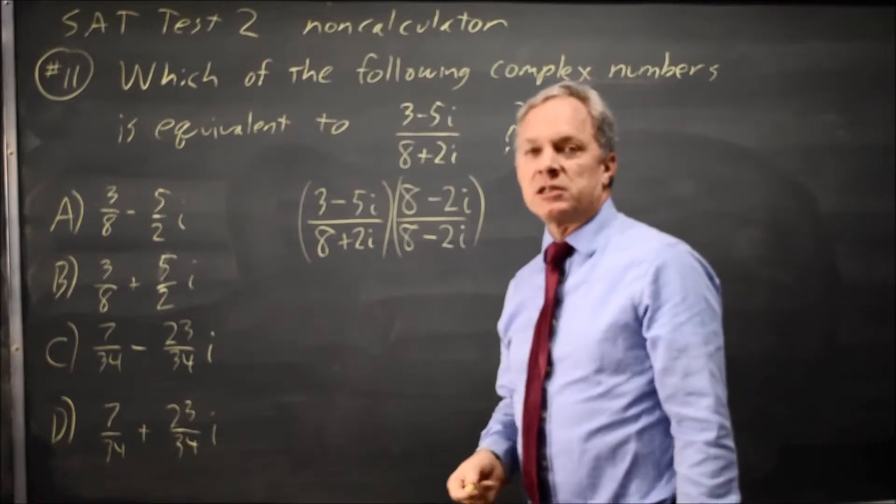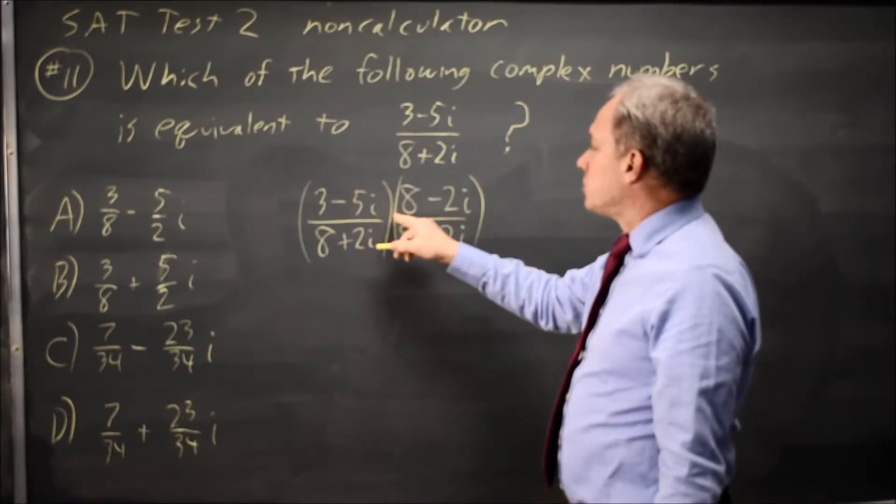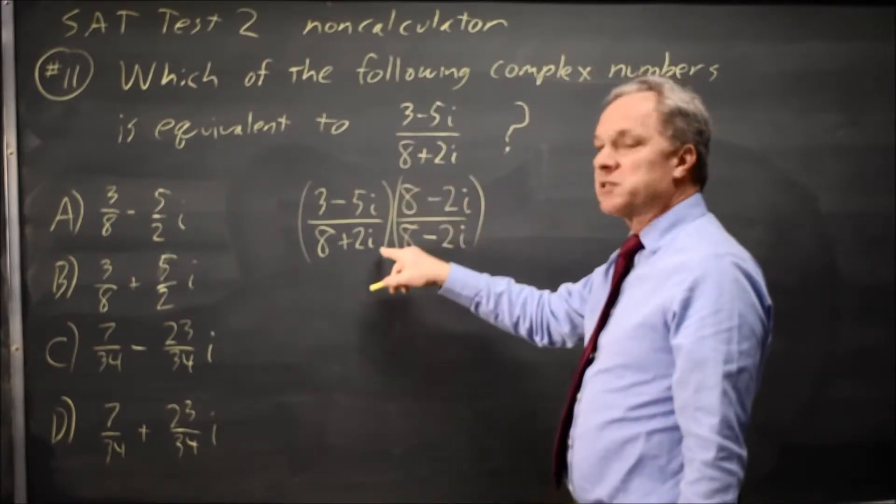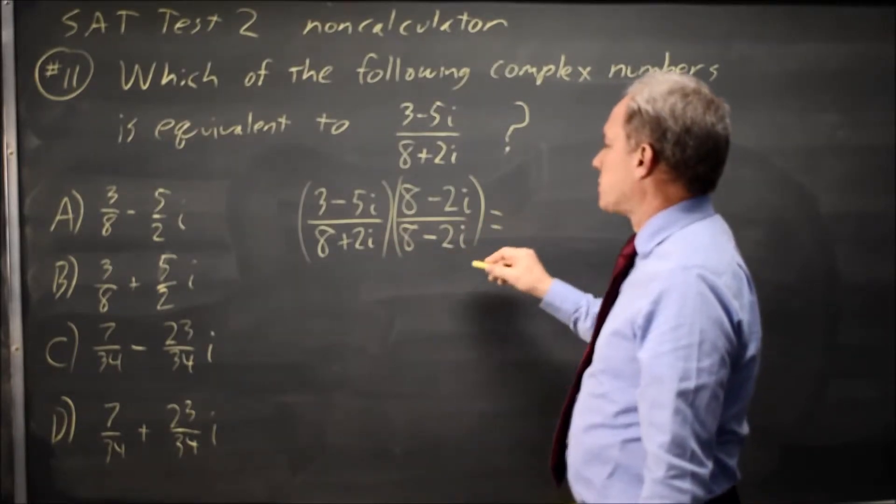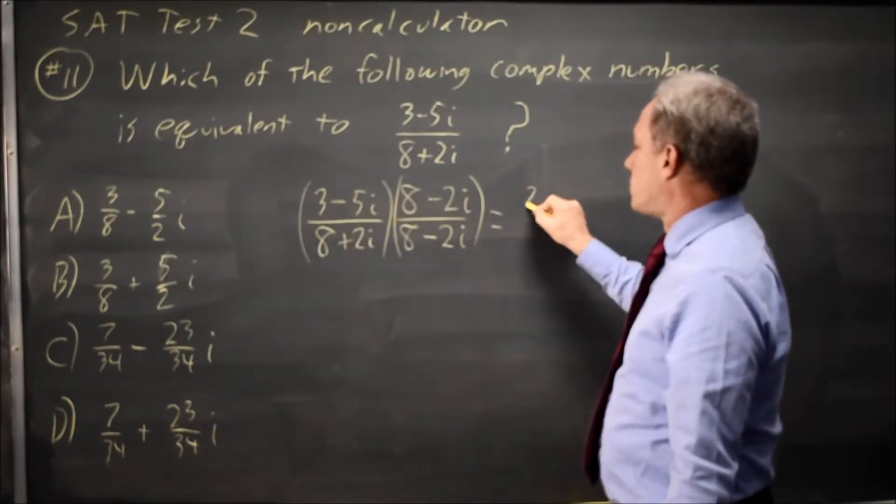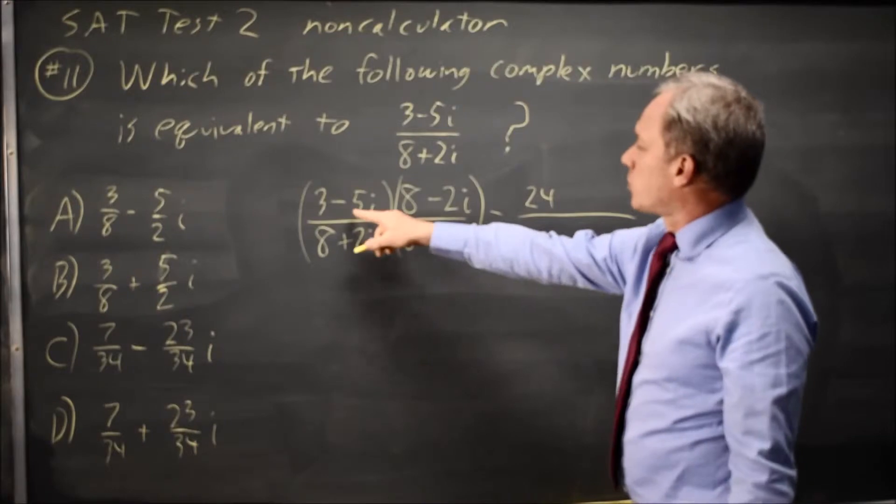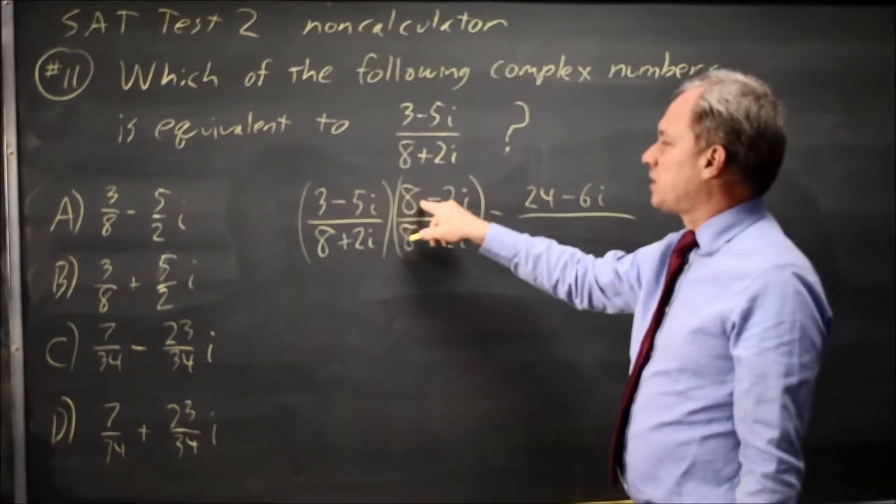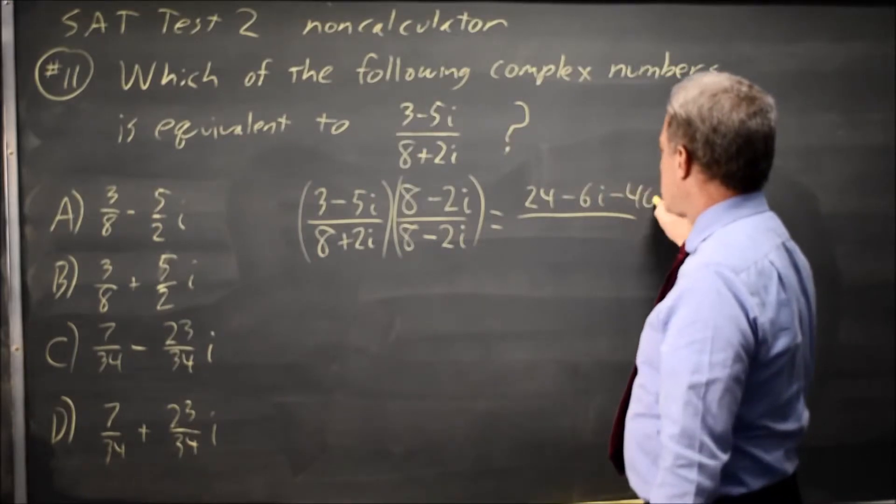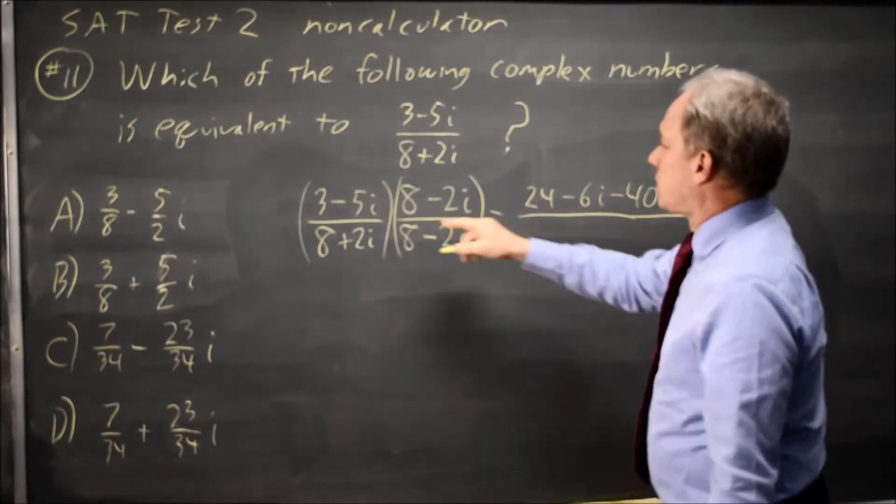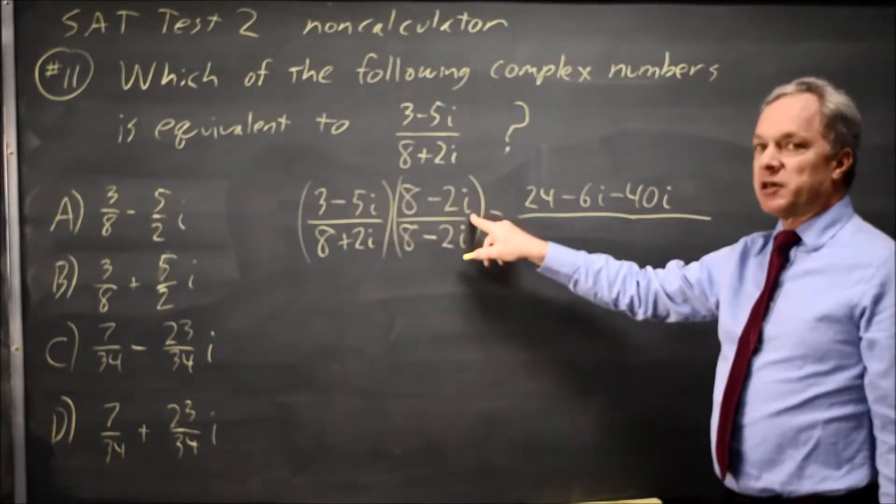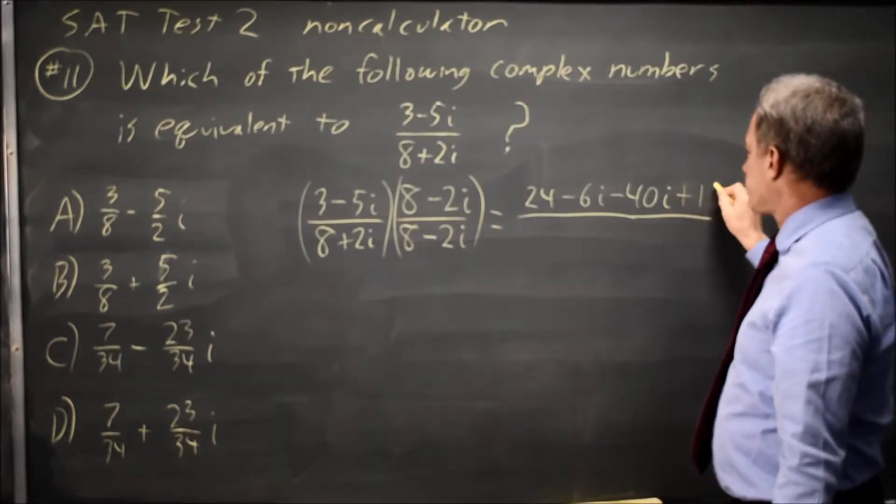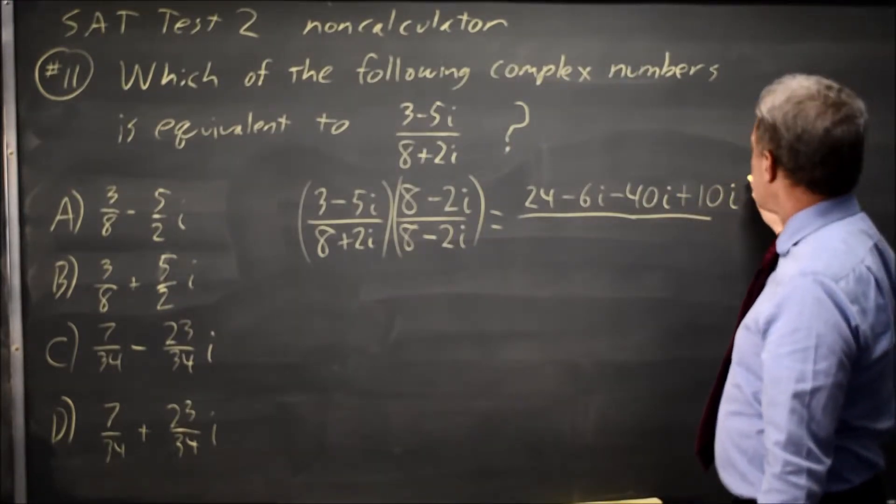To multiply fractions, you are going to use FOIL to multiply the numerators, and then use FOIL to multiply the denominators. So that gives you 3 times 8 is 24 in the numerator. 3 times negative 2i is negative 6i. Negative 5i times 8 is negative 40i. And negative 5i times negative 2i is positive 10i squared. We'll come back to that i squared in a moment.